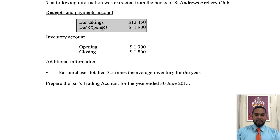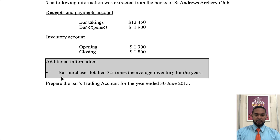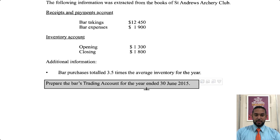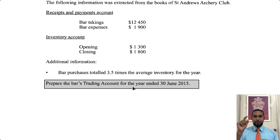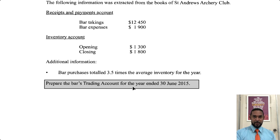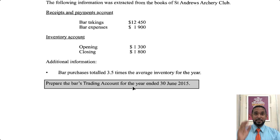We have bar takings and bar expenses, and an inventory account with opening and closing figures. Additional information: bar purchases total 3.5 times the average inventory for the year. They want the bar trading account. When I used to teach this topic, the word 'bar' apparently used to confuse students — it's simply a trading account for the bar. It's the same format with a couple of slight differences.